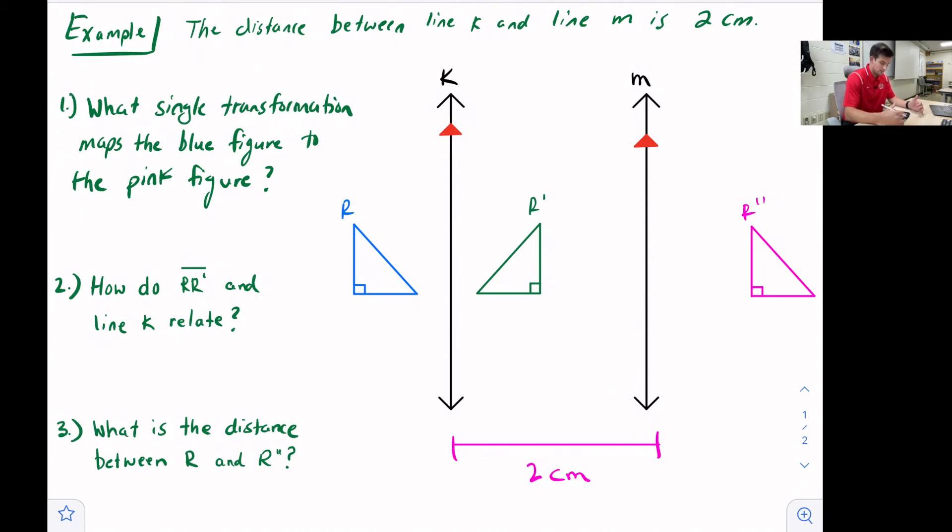We have two parallel lines k and m, we have an original image which is the blue triangle. Then we have one reflection which would be the green triangle, and then we reflect the green triangle to form the pink triangle.